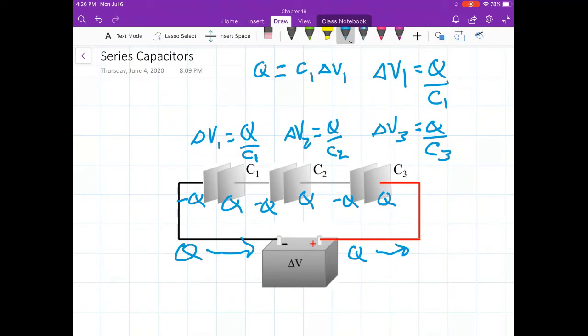Now, if you go back to the previous video where the capacitors were in parallel, what you would have noticed the rule in parallel, everything must have the same delta V, but they had different charges. In series, the rule is everything must have the same charge, but they have different delta Vs.